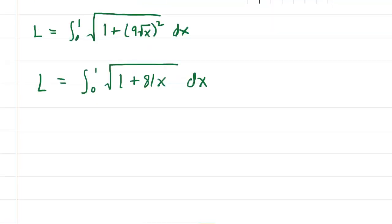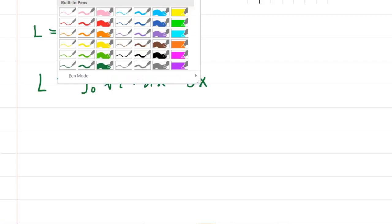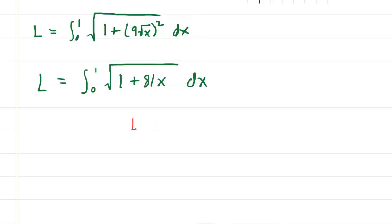Now the rest is just integration. We can evaluate these using a simple u substitution. We'll let u equal the quantity underneath the square root, so u equals one plus 81x. Then we differentiate: du equals 81 dx. I like to solve for dx when doing u substitutions. Multiply both sides by one over 81, so dx equals one over 81 du.